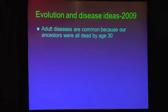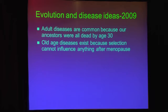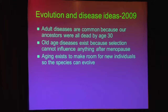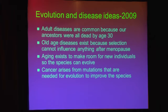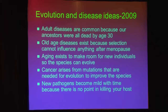Here are some of the things that I heard from the finest stages in the world. I heard several physicians say that adult diseases are common because our ancestors were all dead by age 30, so that natural selection couldn't do anything. I also heard that old-age diseases exist because selection can't do anything after menopause. Aging exists, I heard, to make room for new individuals so the species can evolve faster. Cancer arises from mutations that are necessary so that natural selection can improve the species. And finally, new pathogens become mild with time because there's no point in really killing your host.